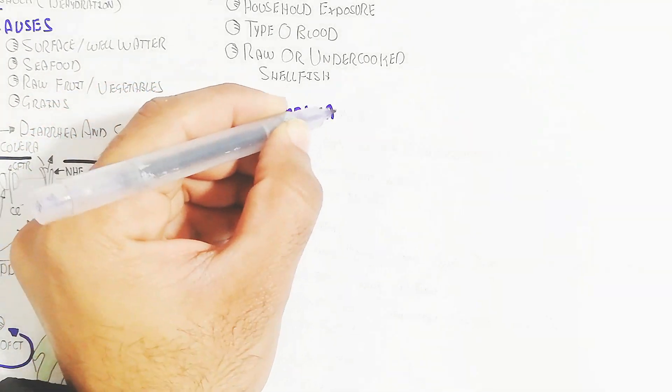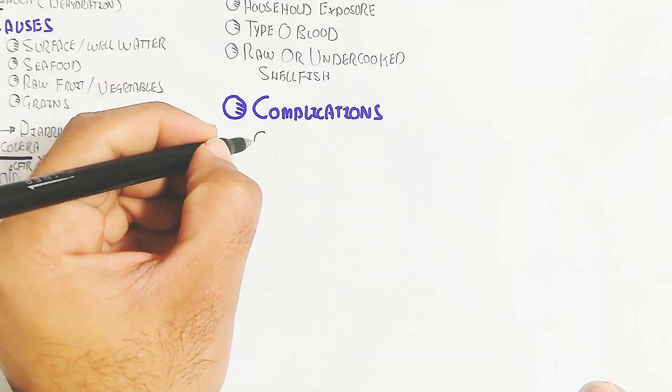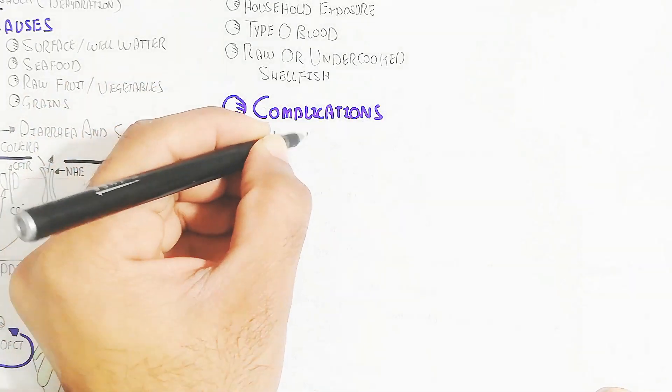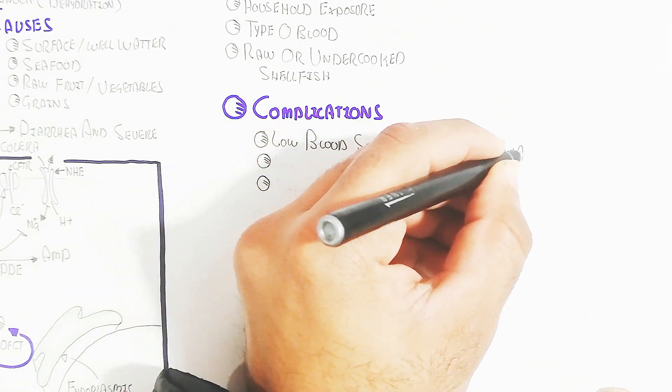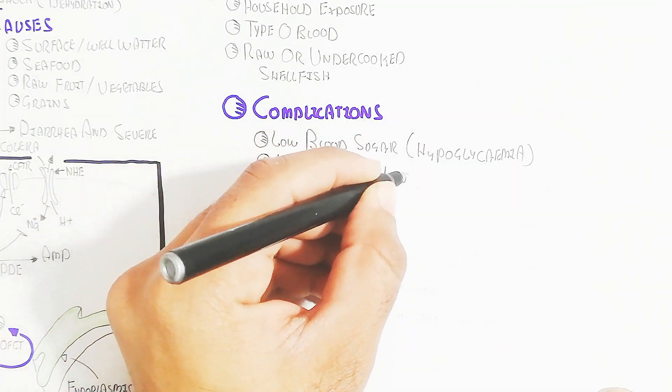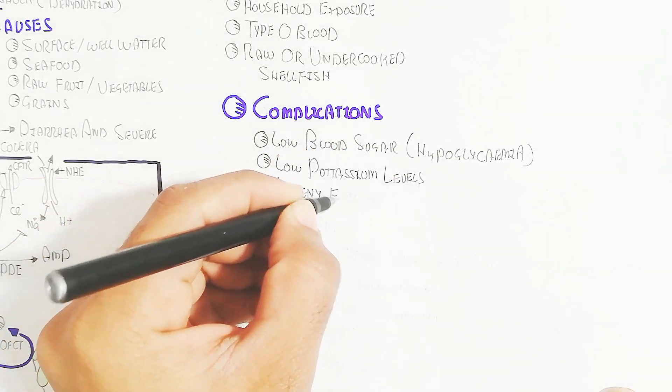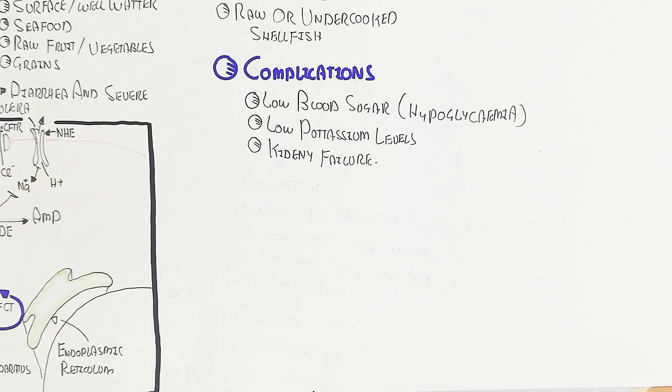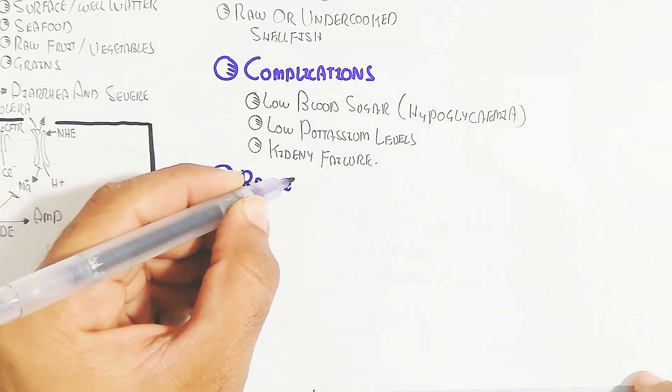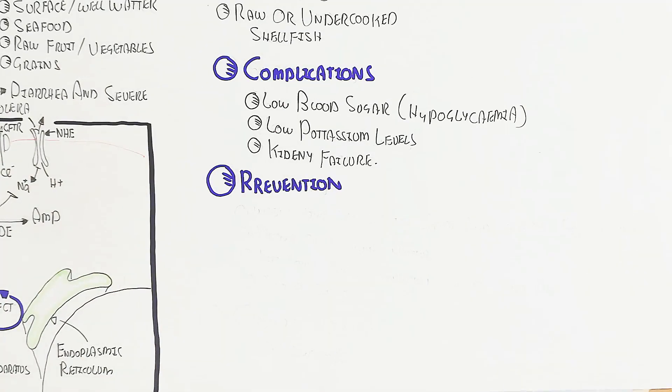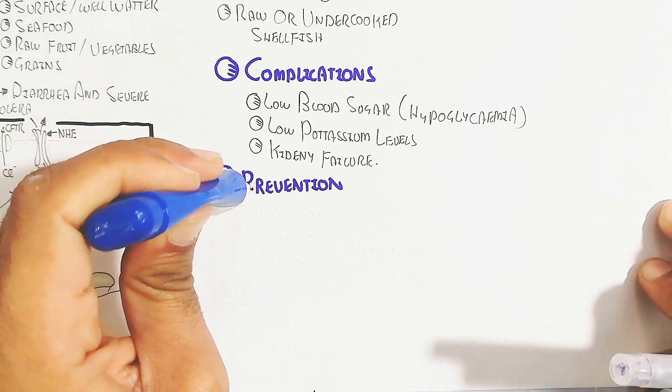Let's understand the complications. Low blood sugar, known as hypoglycemia, is a complication due to cholera infection. Low potassium levels occur due to less absorption of potassium from the digestive system. Kidney failure is also possible because dehydration will lead to shock and kidney failure.